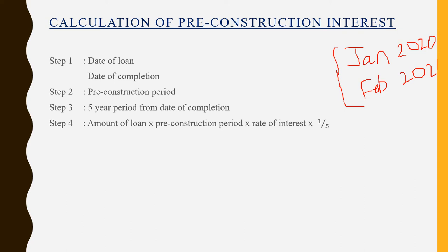This pre-construction interest could not be claimed by the assessee during the pre-construction period because in this period the assessee did not have any income — he did not receive any rent from the property. So he would not have claimed the pre-construction interest. After the completion of the property, the assessee can claim the pre-construction interest for a period of five years from the date of completion.